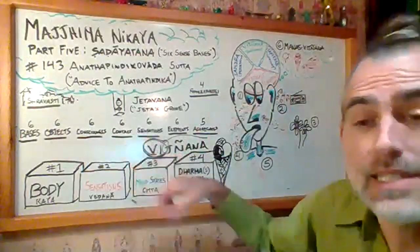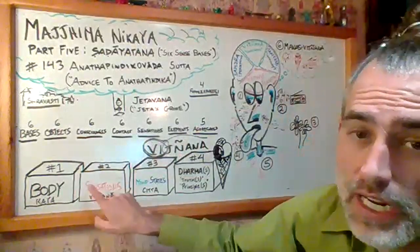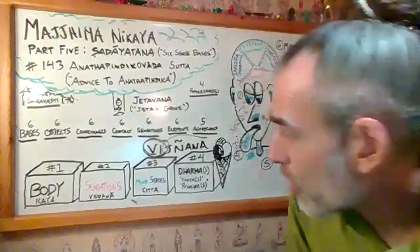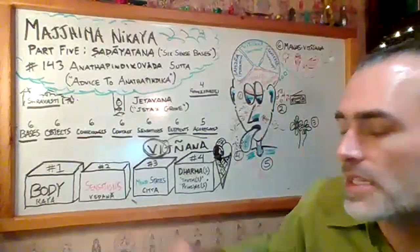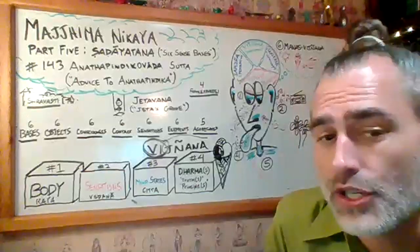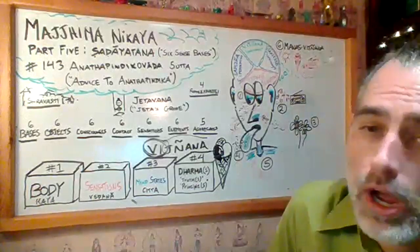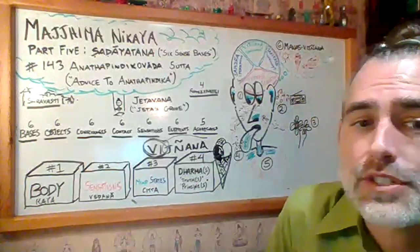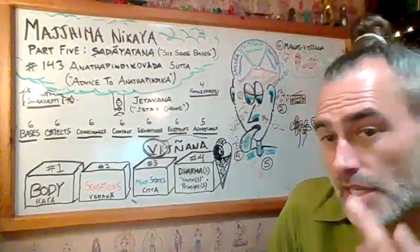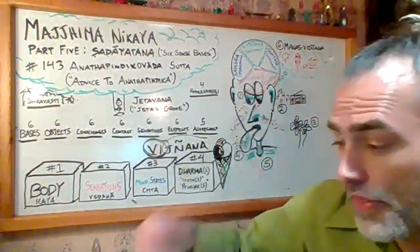That contact will produce six different sensations. Sensations was our second foundation, and this is one of those presentations where there are six kinds of sensations: sensations of the eye, ear, nose, tongue, body, and then thinking.